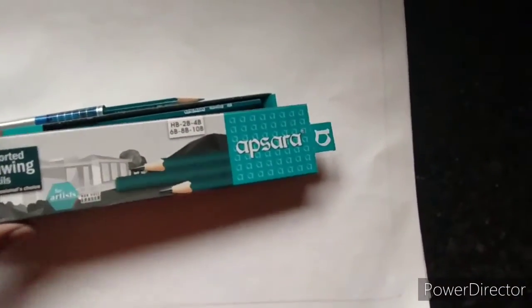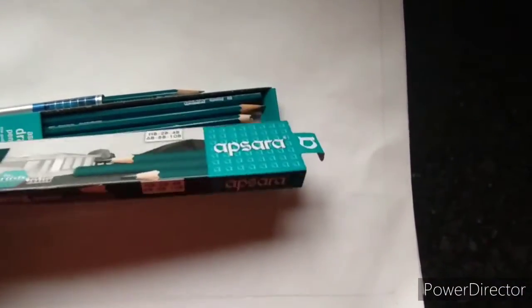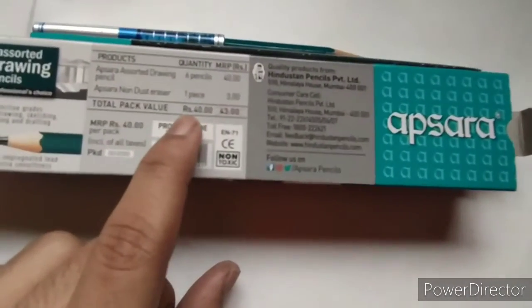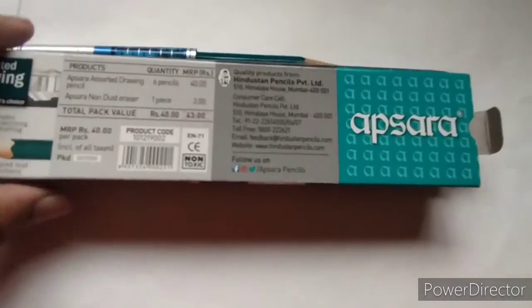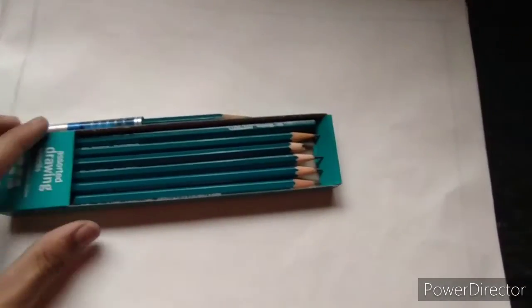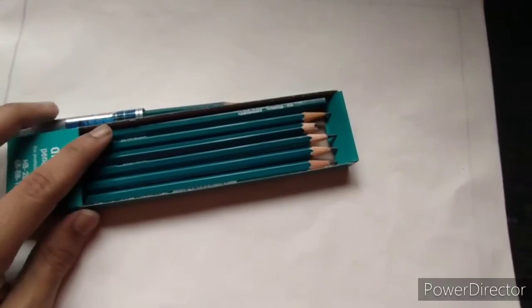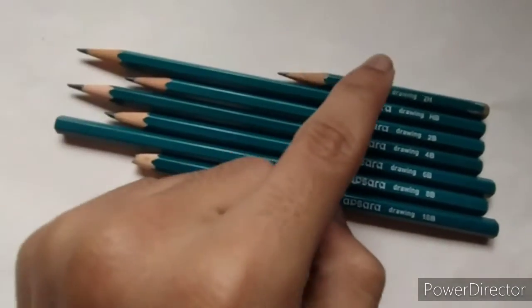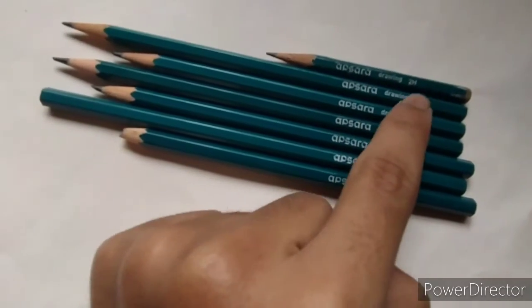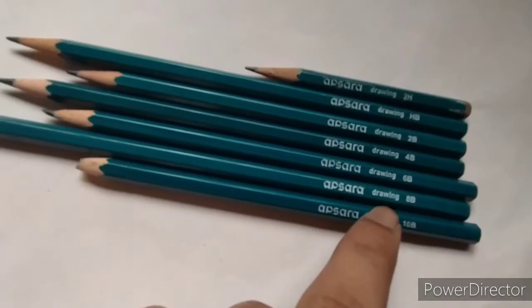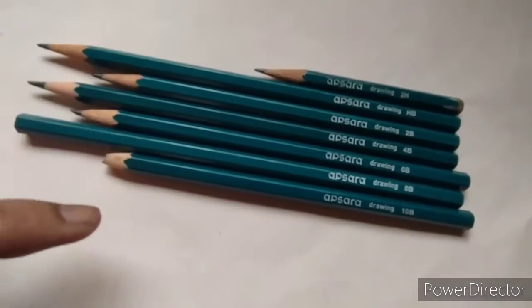So here I have Apsara Pencil, it is of 40 rupees. You can see here I have the 6 grades in my box: it is HP, 2B, 4B, 6B, 8B and 10B. Here you can see the 2H is already, I have here different grade pencils.